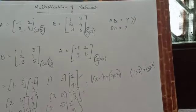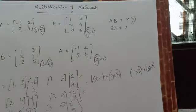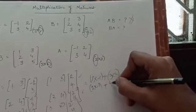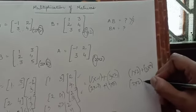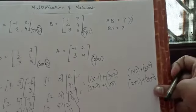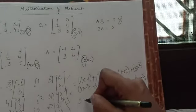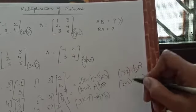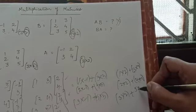For the second row: 2 into minus 1, plus 4 into 3 for the first element; and 2 into 2, plus 4 into 4 for the second element. For the third row: 3 into minus 1, plus 5 into 3 for the first element; and 3 into 2, plus 5 into 4 for the second element.